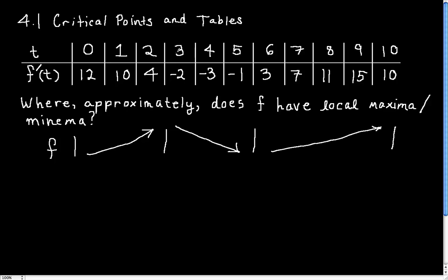So we just have to do our best guess. And our best guess is that we have a critical point, that the derivative equals 0 somewhere in here. So somewhere in between t equals 2 and t equals 3, the derivative goes from 4 to negative 2. So what we assume is that somewhere in here, f prime equals 0.